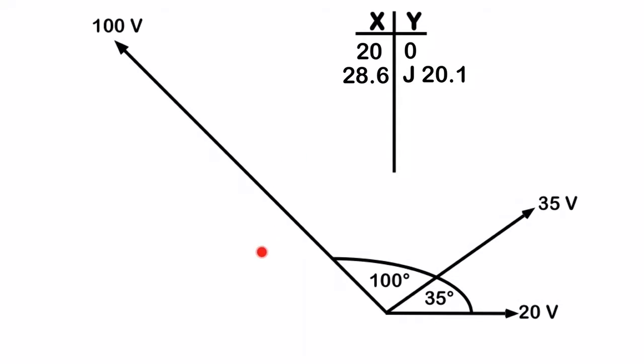And my last one here is just going to take the cos of 135 degrees times 100 volts will give me my X, and the sine of 135 degrees times 100 volts gives me my Y. So plugging that into the calculator, I get my X being negative 70.7, and I get my Y being 70.7 as well.